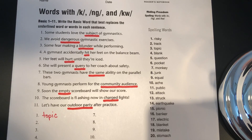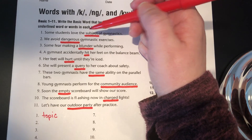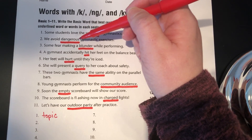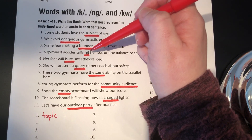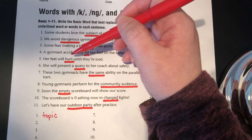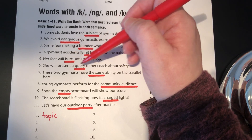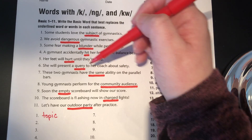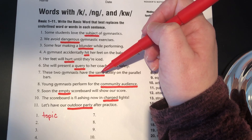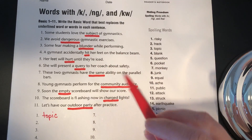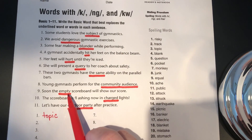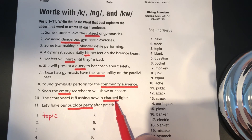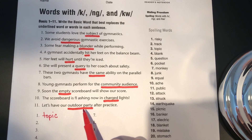For sentence number one, the underlined word is subject. For sentence two, dangerous. For sentence three, blunder. For sentence four, hit. Sentence five, hurt. Sentence six, quarry. For sentence seven, the words are the same. For sentence eight, it's community audience. For sentence nine, the underlined word is empty. For sentence ten, the underlined word is charged. And for sentence eleven, the underlined words are outdoor party.